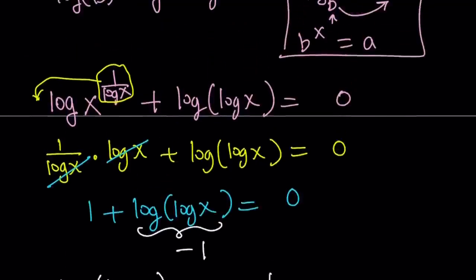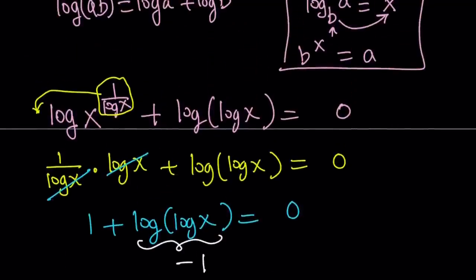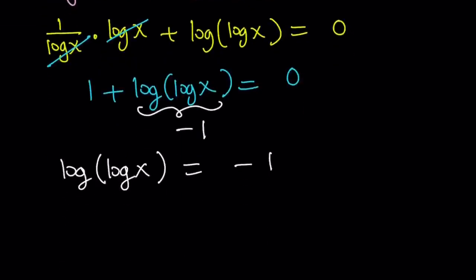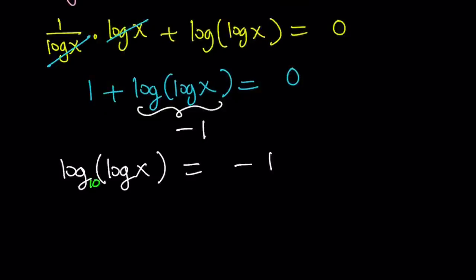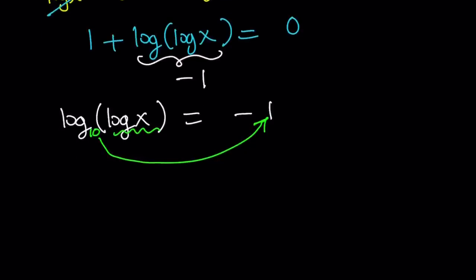At this point, let's go ahead and remember the definition. Now if I have a log equation, I can always turn it into an exponential equation by using this definition. Very easy, right? But since the base is not written, let me go ahead and write that down. Here the base would be 10. So by using our definition, we can safely say that this is 10 to the power negative 1 and it should equal log x. In other words, from here we get log x equals 10 to the power negative 1.